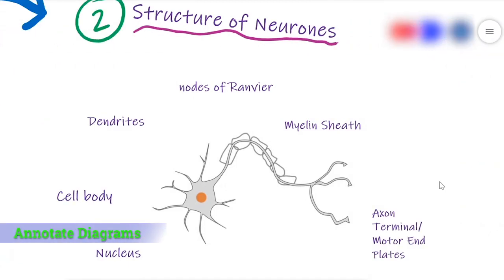You can insert Bing search engine images onto the canvas such as the diagram of a neuron and ask them to label or draw lines.